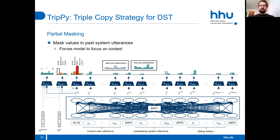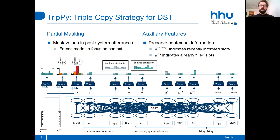We masked the values in past system utterances to force the model to focus on the historical context rather than specific values. The slot gates also use auxiliary features, which are binary vectors that indicate which slots were recently informed and which slots were already filled before.